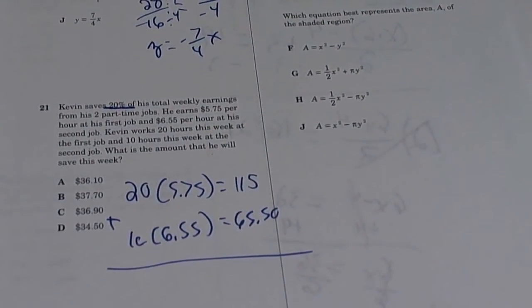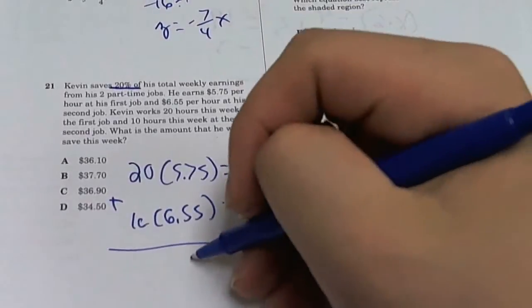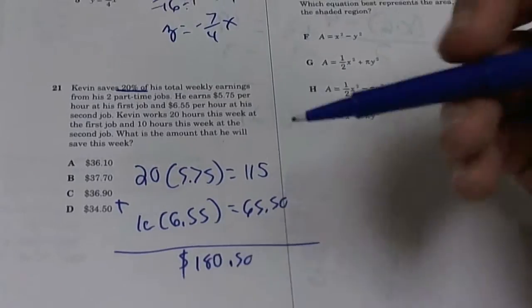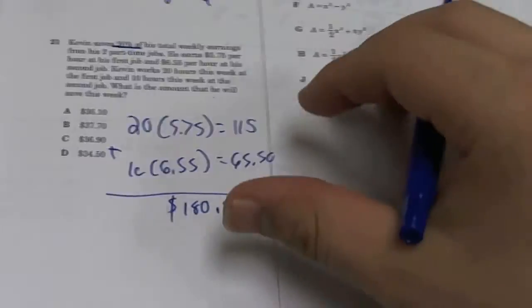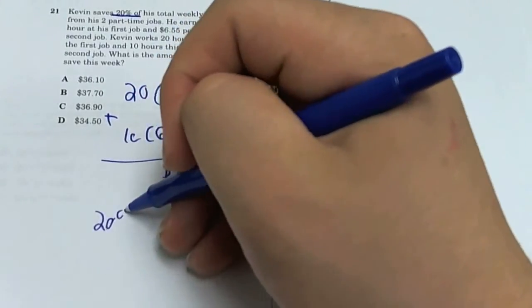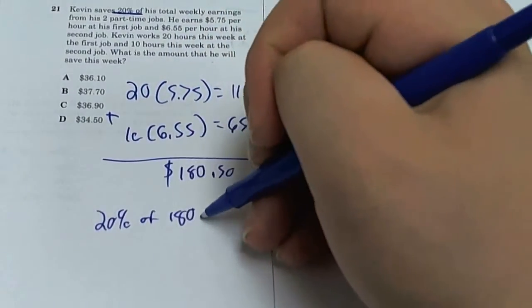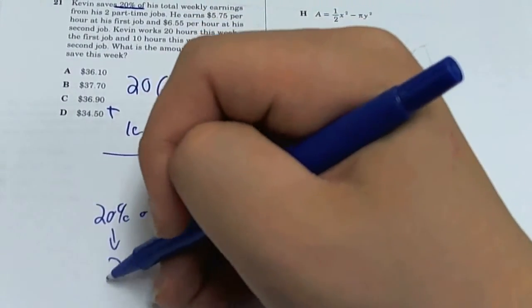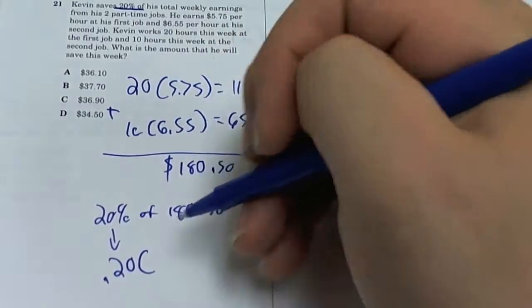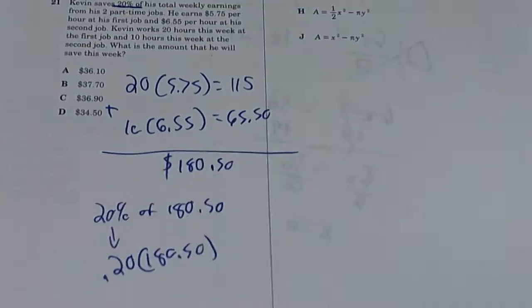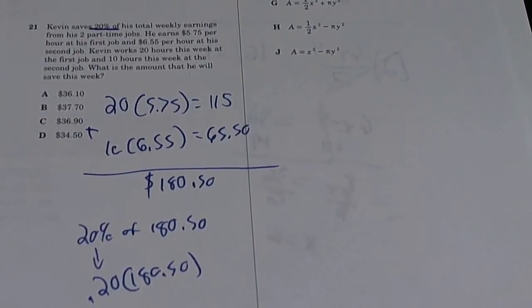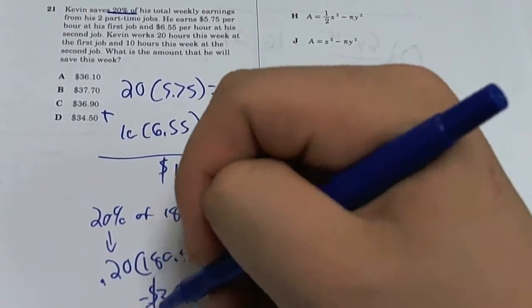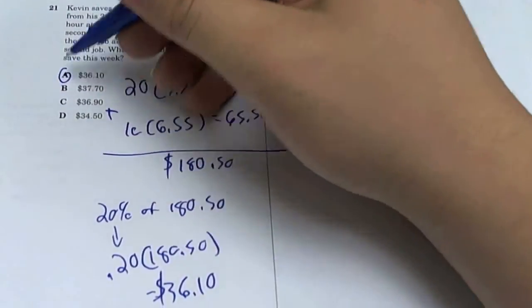Now to find out how much he earns in total, you add both of these. So $115 plus $65.50, which gives you $180.50. So now he saves 20% of this. What is 20% of $180.50? Remember what 20% means: 0.20. So $180.50 times 0.20 is equal to $36.10. So the answer is A.